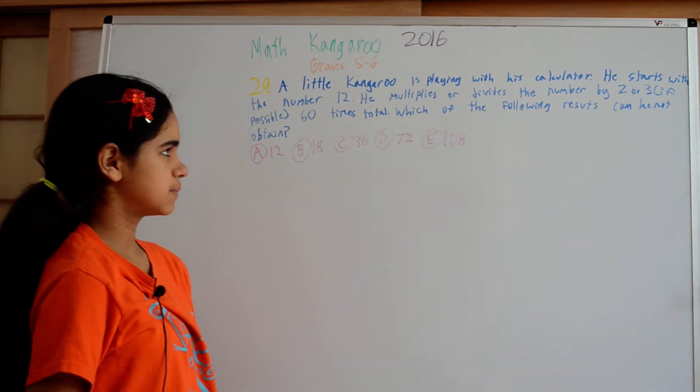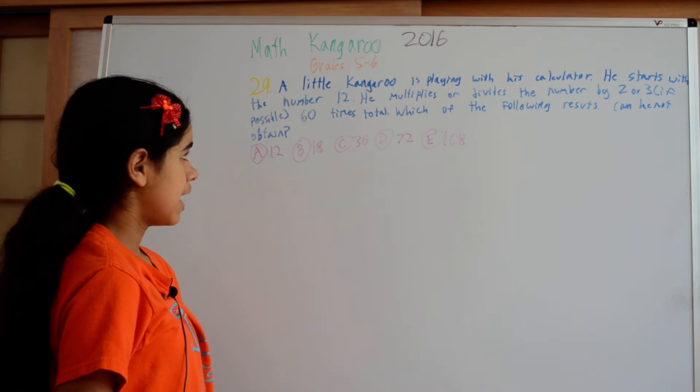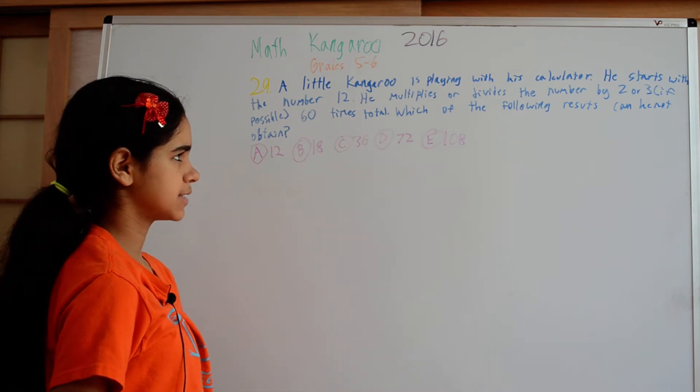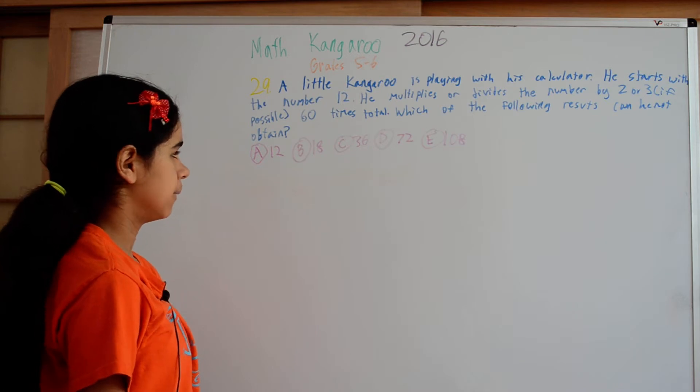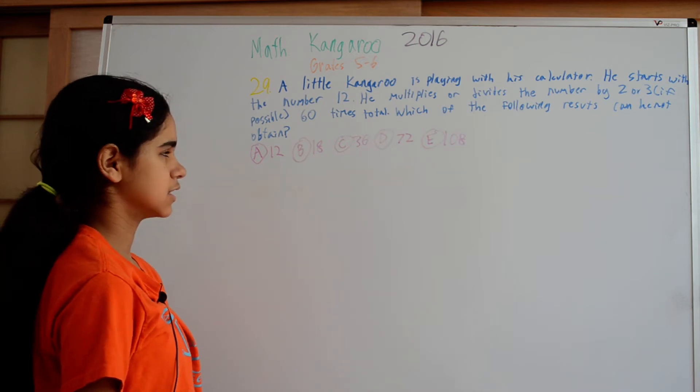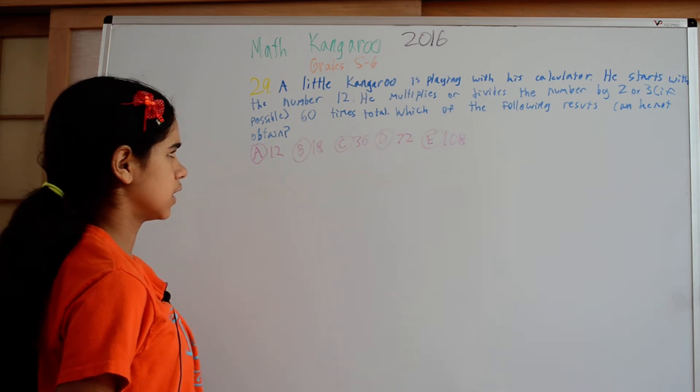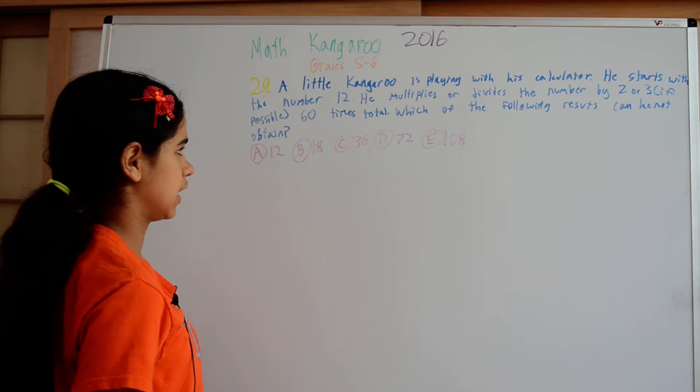A little kangaroo is playing with his calculator and he starts with the number 12 and multiplies or divides the number by 2 or 3, if it's possible, 60 times in total. Which of the following results can he not obtain?